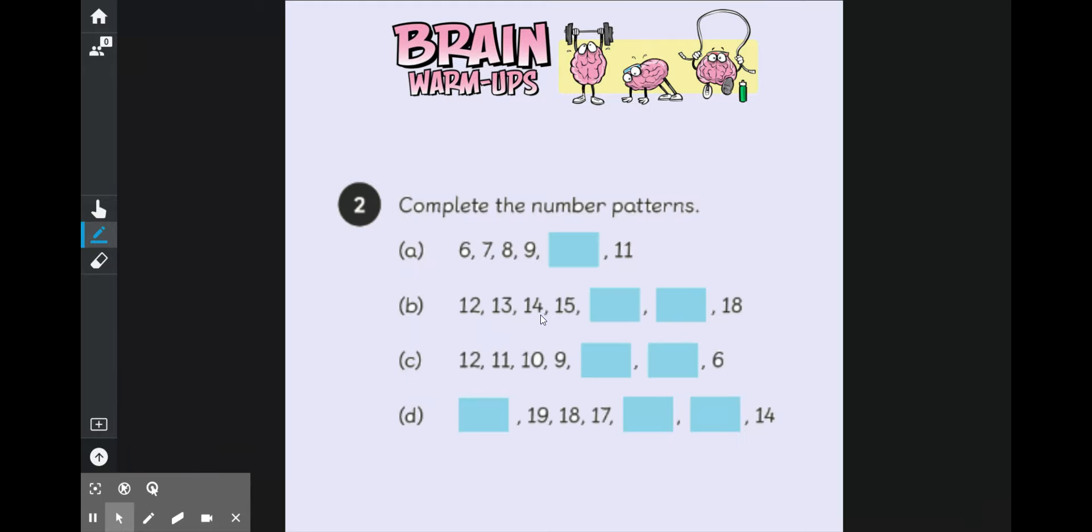And another challenge for us, given our maths brains all warmed up, we've got some number patterns on the board. Some of our numbers here with the blue boxes have gone missing. Let's work out if we can see which numbers are missing. 6, 7, 8, 9, 10, 11. This one starts from 12. This is a bit trickier. 12, 13, 14, 15, 16. Our numbers are getting one bigger each time.